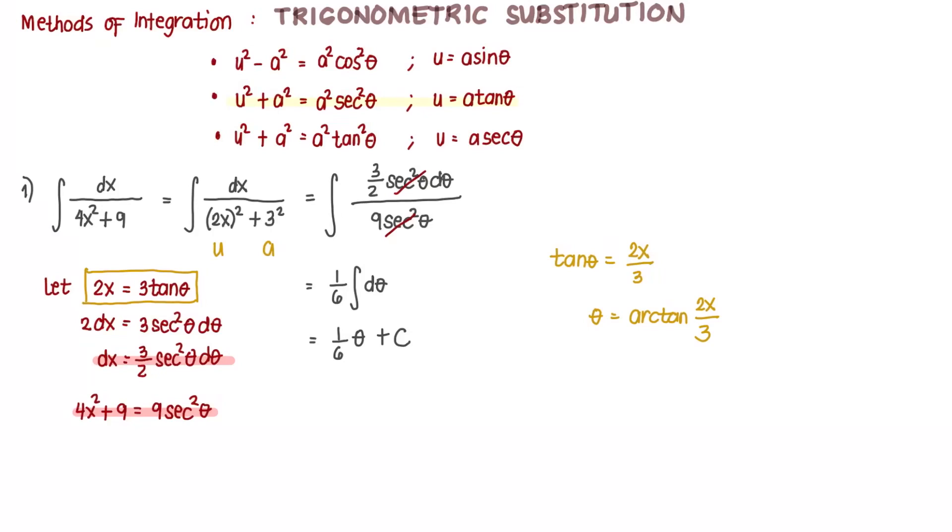So we rewrite our answer. Our final answer is 1 sixth arc tangent of 2x over 3 plus c. So that's our final answer. We'll solve more problems in the next videos.